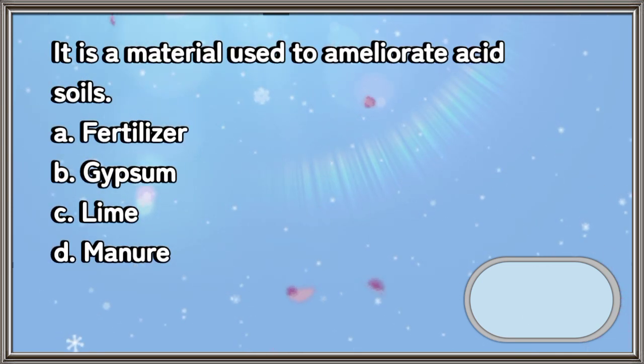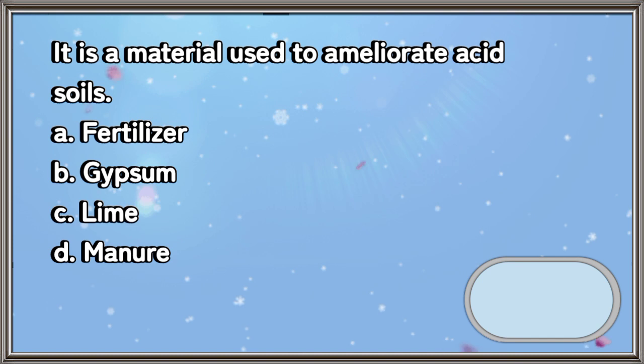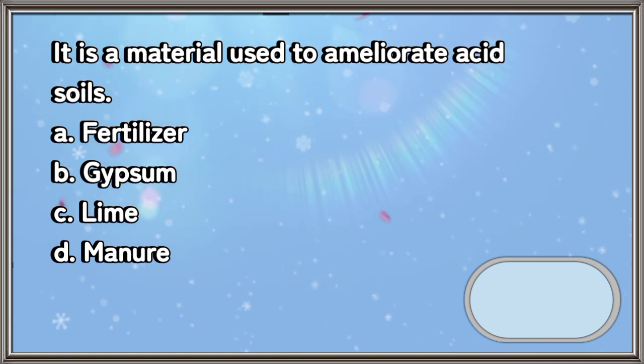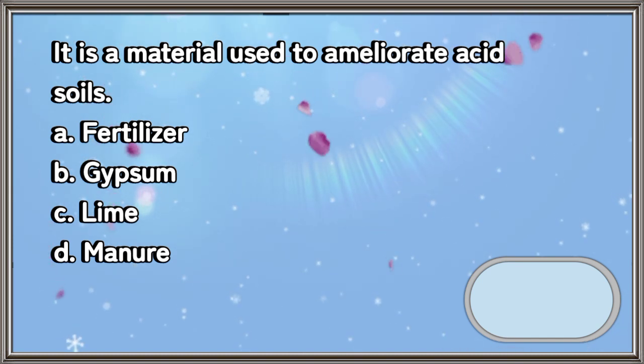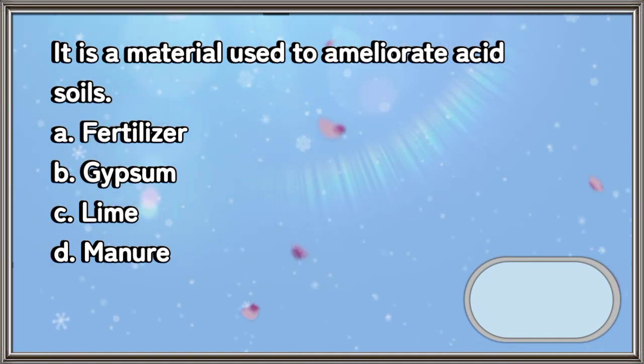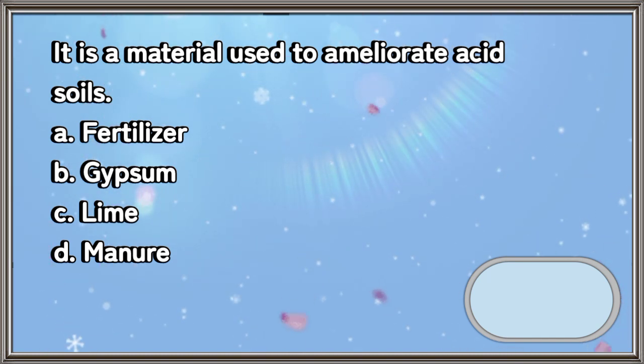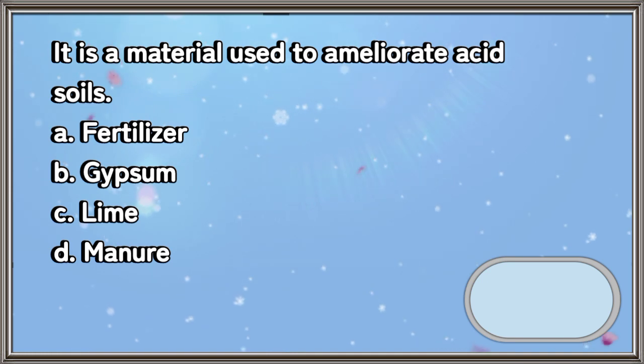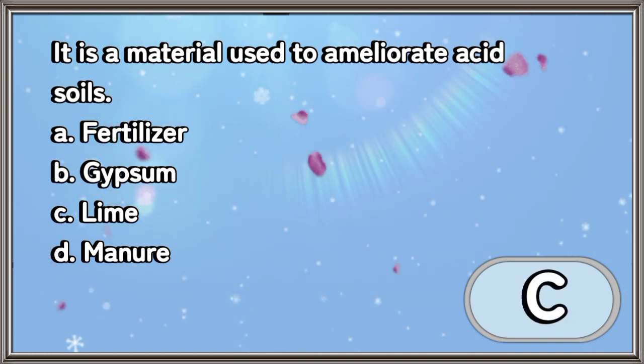It is a material used to ameliorate acid soils: A. Fertilizer, B. Gypsum, C. Lime, D. Manure. The answer is letter C.